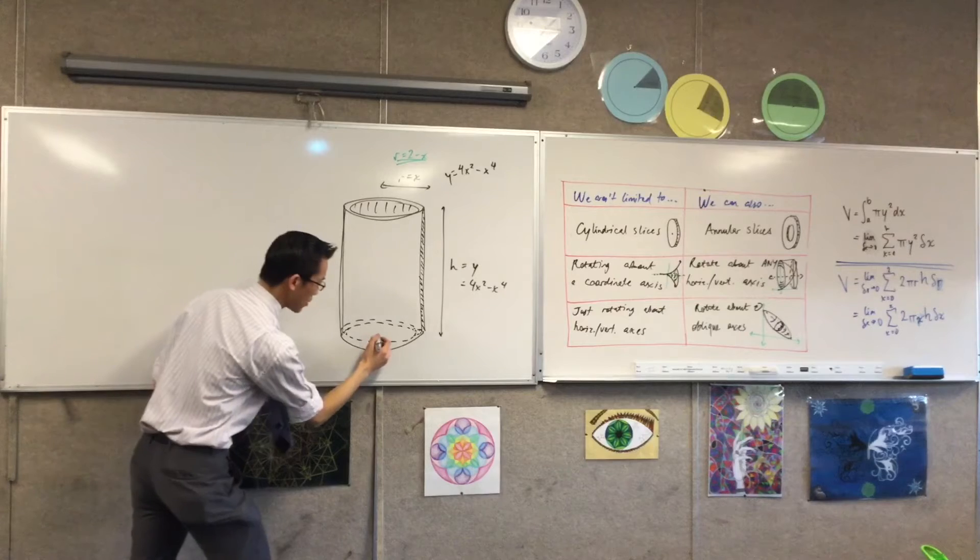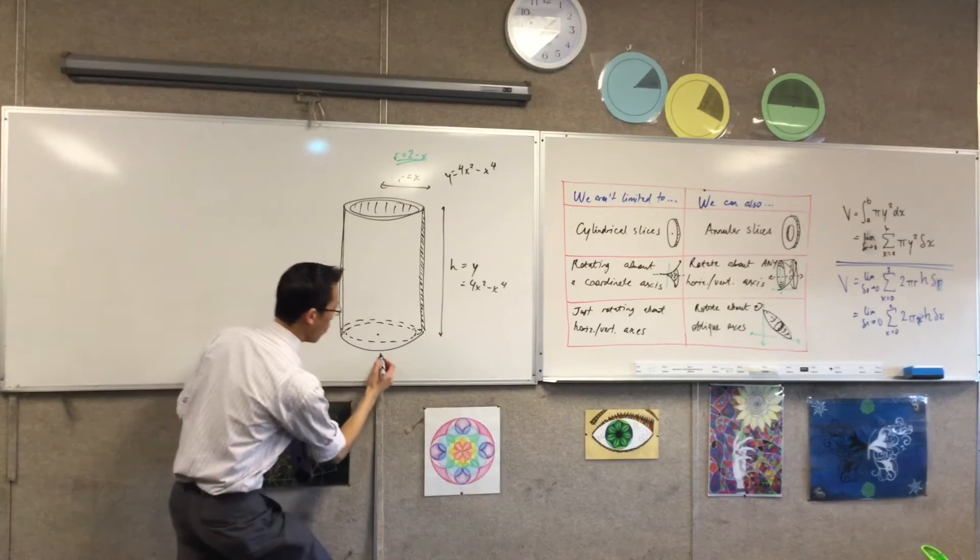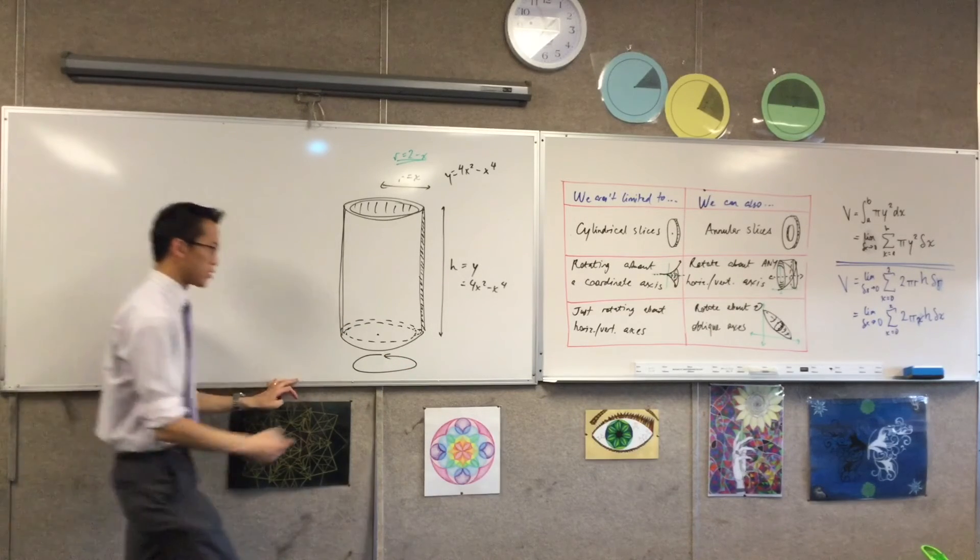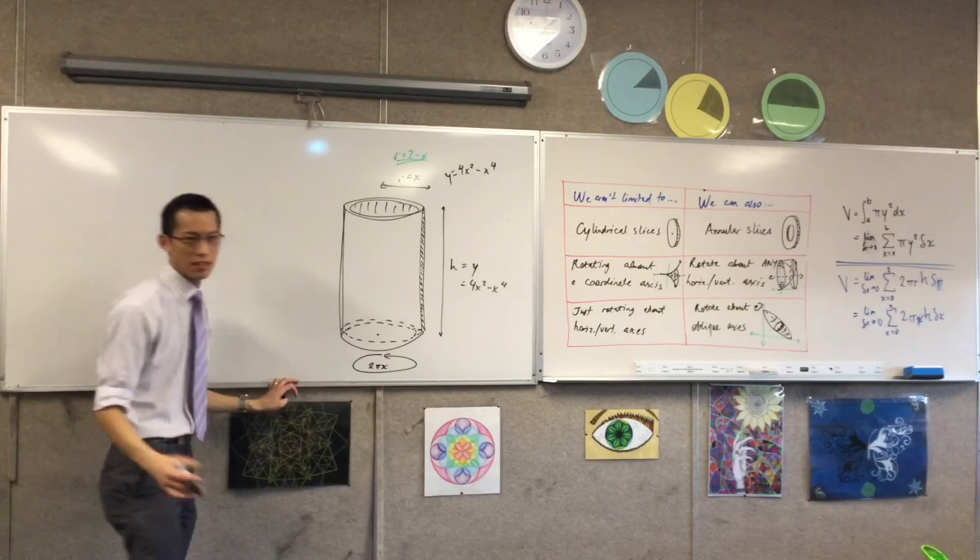One last thing I'm going to put on here. If you have the center of that circular cross-section there, what we really need to work out this volume is this guy, which is the circumference. So this is 2πx instead of 2πr.